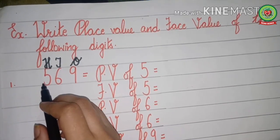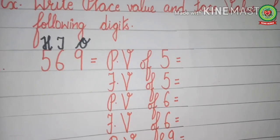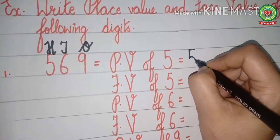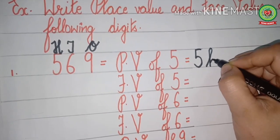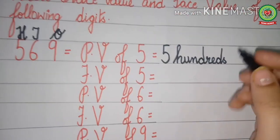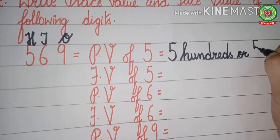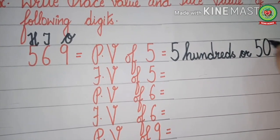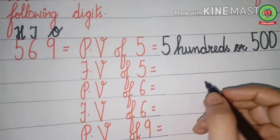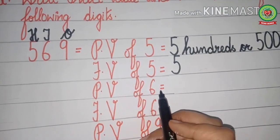First we write the place value and face value of 5. What is written above 5? Hundreds. So the place value of 5 is five hundreds. Spell 'hundreds' — H-U-N-D-R-E-D-S. Hundreds has two zeros, so we write 500. The face value of 5 means the name of that number, so the face value of 5 is 5.